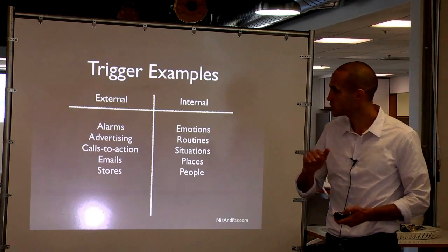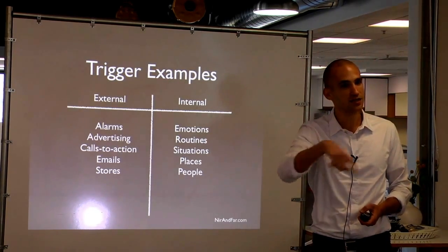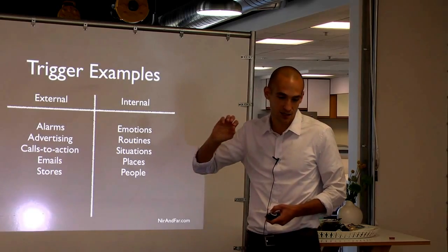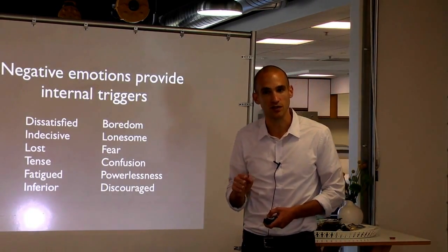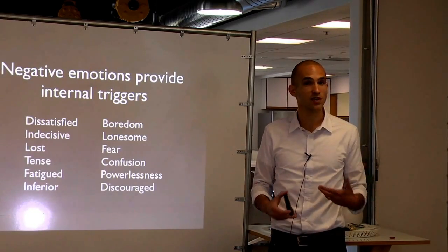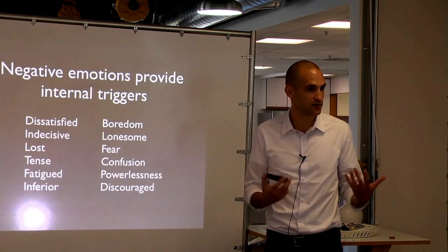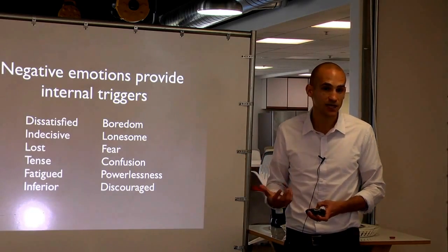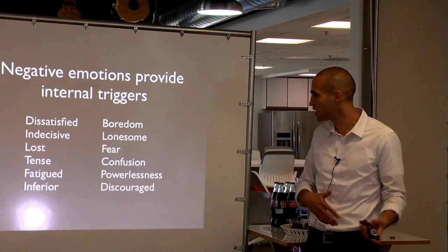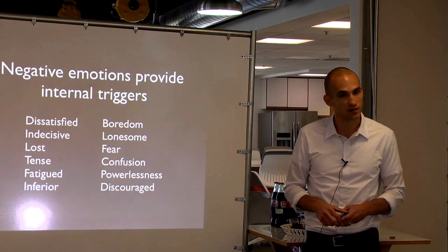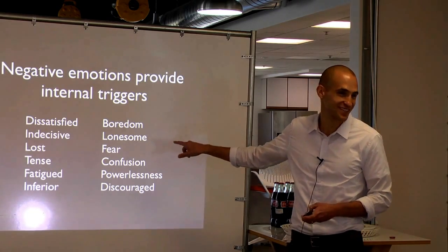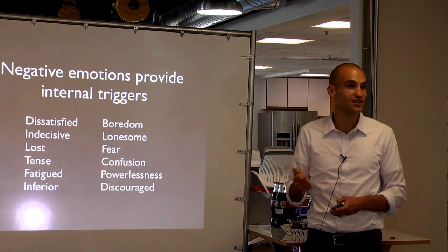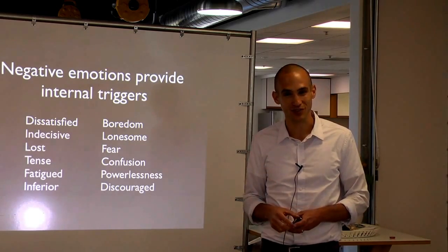The Desire Engine starts with external triggers and ends with internal triggers because internal triggers are the space you want to own. It turns out that negative emotions are the most powerful internal triggers — we have a desire to alleviate pain. Users want to alleviate pain more than they seek pleasure. So anytime we feel bored, dissatisfied, lost, or lonesome, we instantly use these products. When you feel bored, there's an instant reaction to pull up Facebook or Twitter. These are internal triggers.